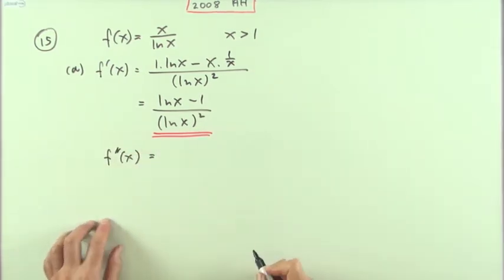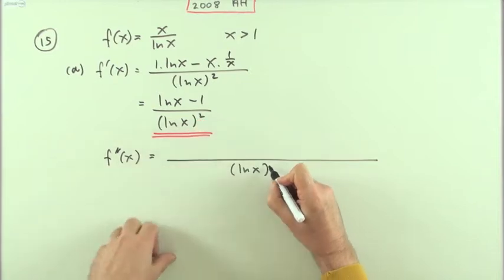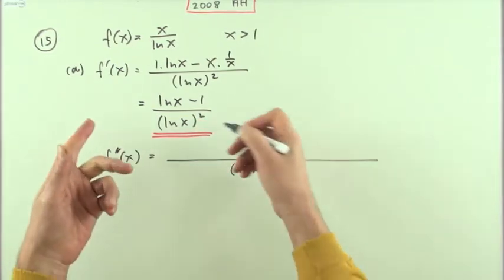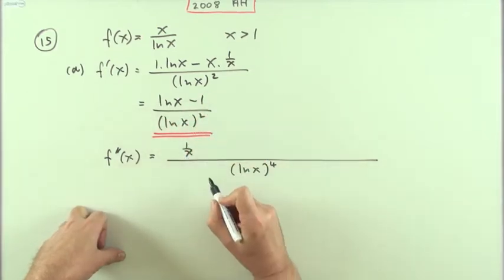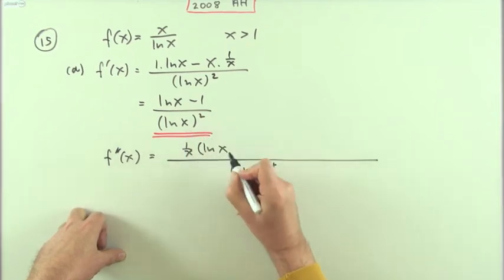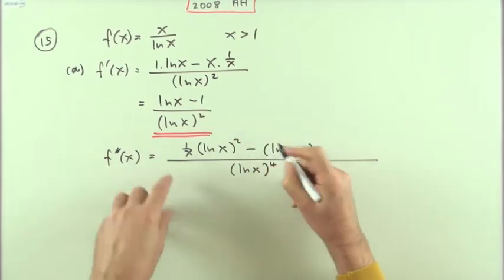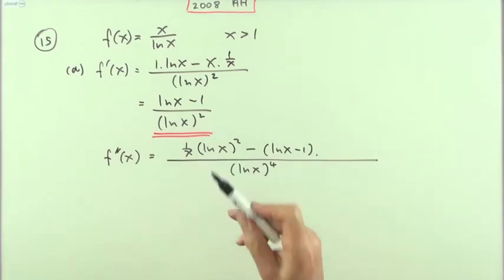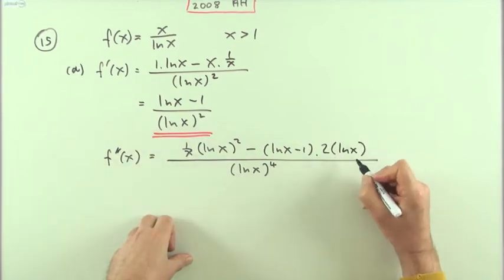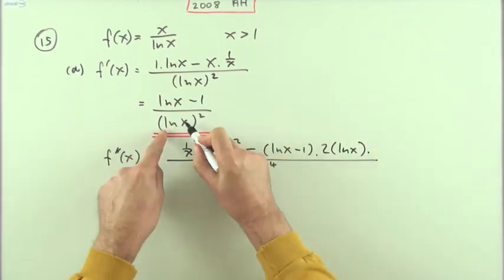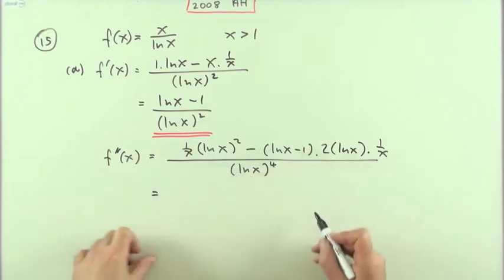Second derivative: quotient rule again, unfortunately. Now I've got ln x squared to square, so that'll be ln x to the power four. Then, differentiate the top. Differentiating the numerator, ln x goes to one over x, that's a constant, so it goes times leave the other function, the denominator alone, which is ln x squared. Minus leave the top alone, ln x minus one, times the derivative of the denominator, which is now a function of a function, so it will be outer function first, two times the ln x to the power one, multiplied by the derivative of the inner function, which is one upon x.